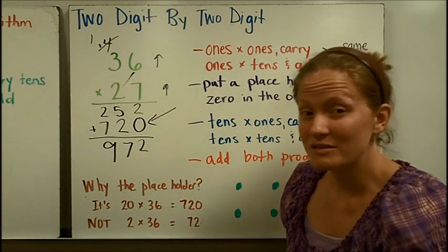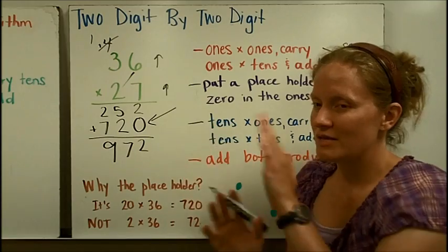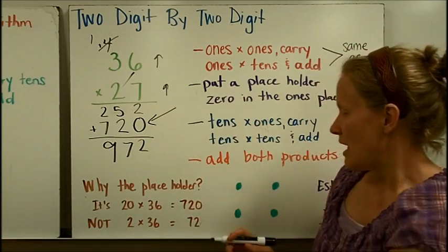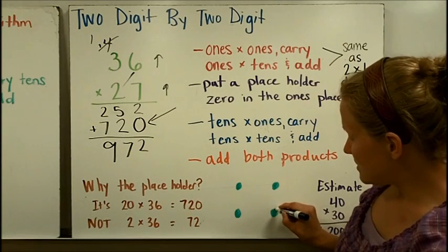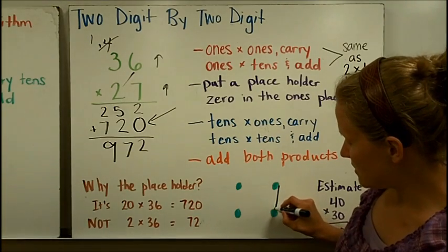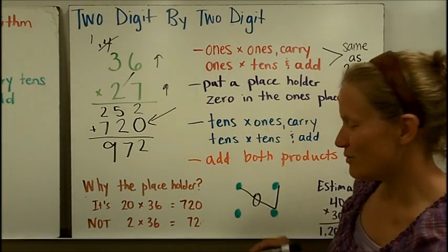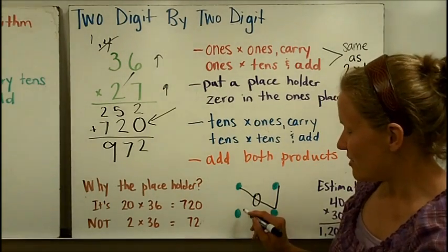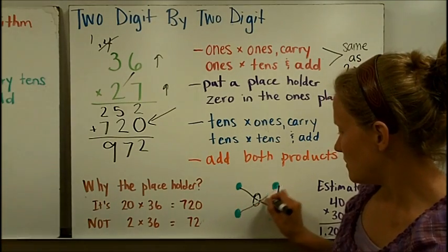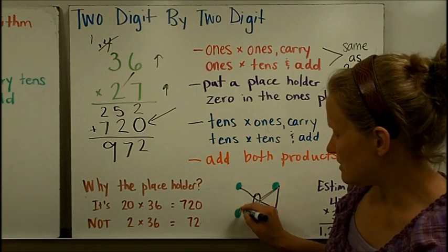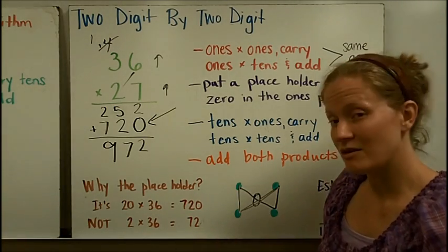Another reminder, just like we did in the partial products method, sometimes it gets confusing about this times this times what times what. And you can think about the bow tie again. You want to go ones times ones, ones times tens. Then, this is the step we're adding, you want to put the placeholder 0 in the middle. Then you're going to go tens times ones, and tens times tens. And if you have created a bow tie, then you know that you have done it correctly.